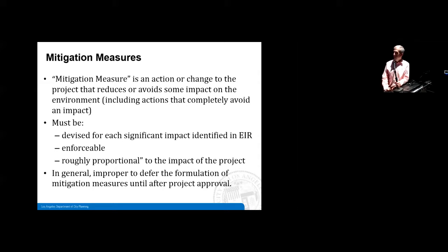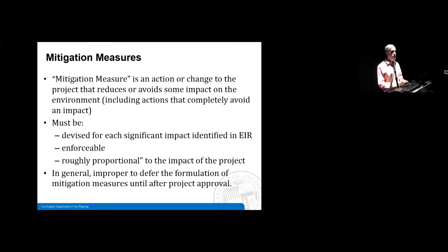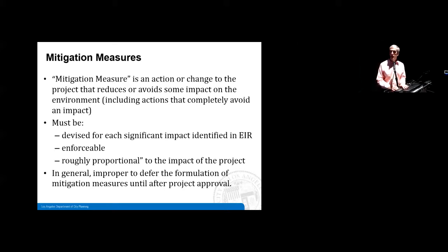Deferred mitigation is not permitted — it is improper to defer the formulation of mitigation measures until after project approval. The mitigation measures need to be identified in the environmental document. In terms of preservation, it's easy to fall into the trap of deferred mitigation — ensuring there's going to be some level of additional design review after a project gets approved. That's possible to some extent, so long as the actual impacts are mitigated through other processes up front as part of the environmental review.